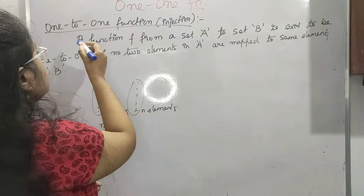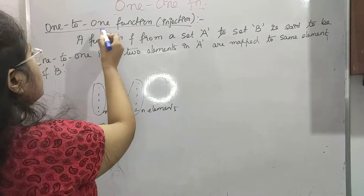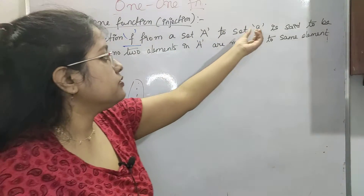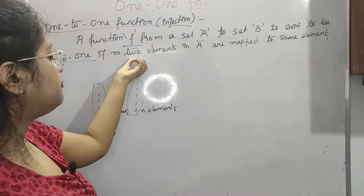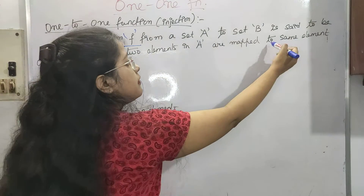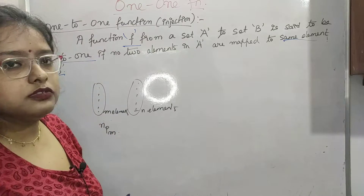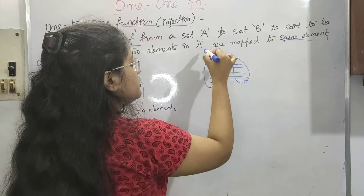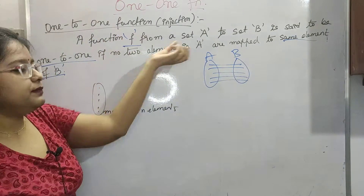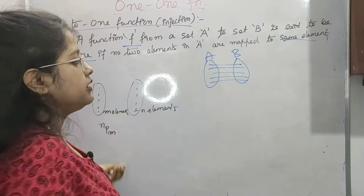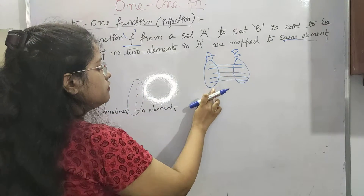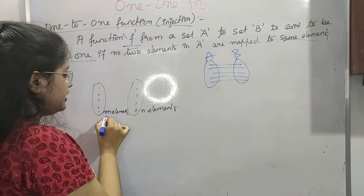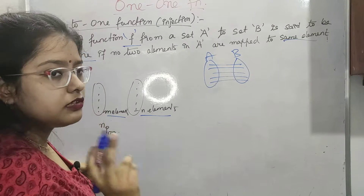Let's continue with functions — specifically one-to-one functions. A function from set A to set B is said to be a one-to-one function if no two elements in A are mapped to the same element in B. We are continuing with M elements in A and N elements in B from our previous video notation.